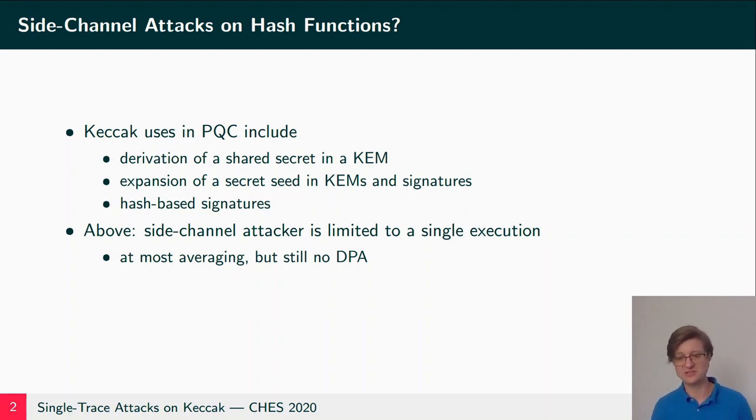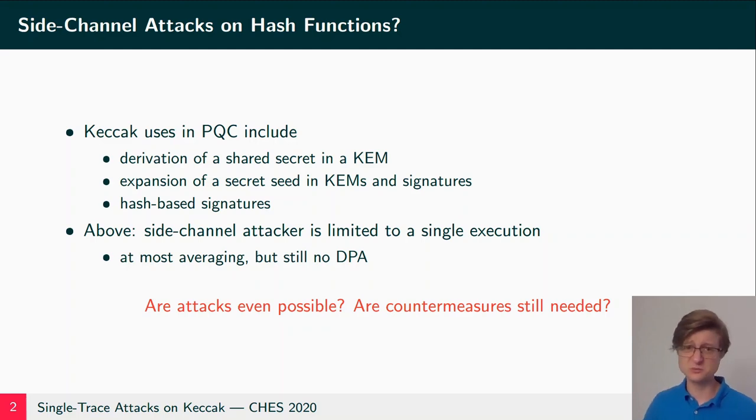Or more correctly speaking in some of these settings, a side-channel attacker can get more traces of a single key, but since all the other data is then constant he can do at most averaging but still no DPA. So in this setting one has to wonder, are attacks even possible here anymore, or can we assume that an attacker doesn't have any chance of recovering the secret from this limited information anyway?